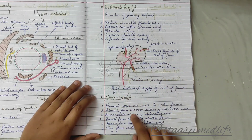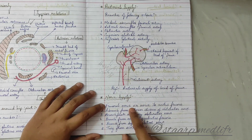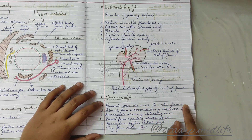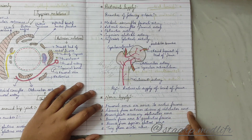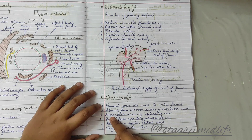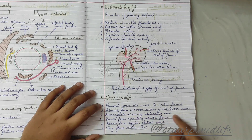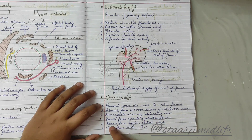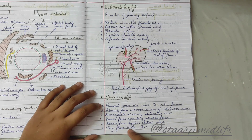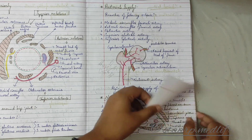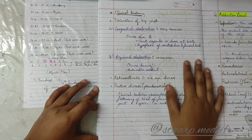The nerve supply of the hip joint comes from: the femoral nerve via the nerve to rectus femoris, a branch from the anterior division of the obturator nerve, a branch from the accessory obturator nerve, a branch from the nerve to quadratus femoris, a branch from the superior gluteal nerve, and a twig from the sciatic nerve.